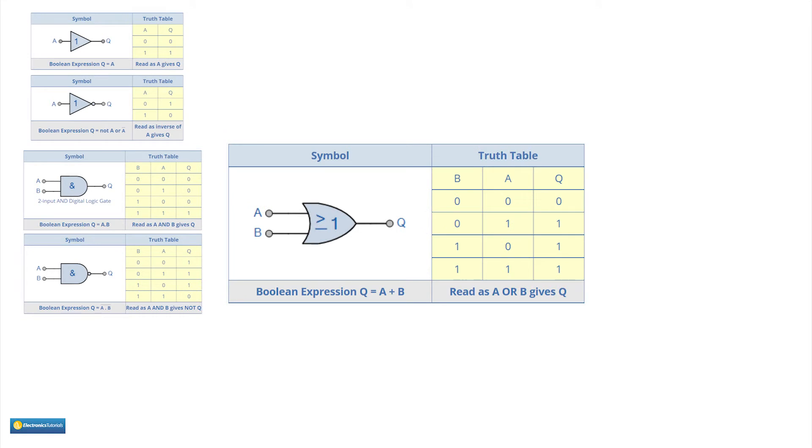This is the symbol and truth table for the OR gate. OR because if A or B goes high the output goes high.